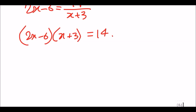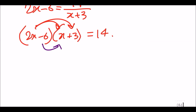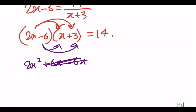Expanding the bracket: 2x times x gives 2x², 2x times 3 gives +6x, minus 6 times x gives −6x — these cancel out — and minus 6 times 3 gives −18. So we have 2x² − 18 = 14.